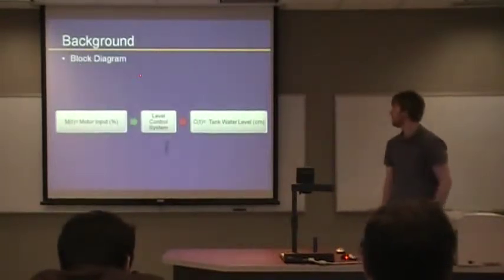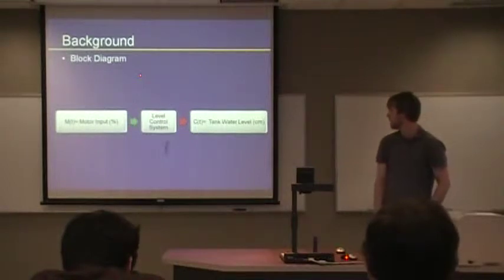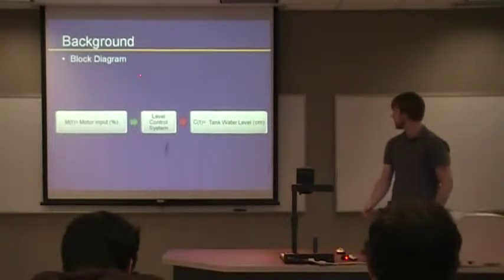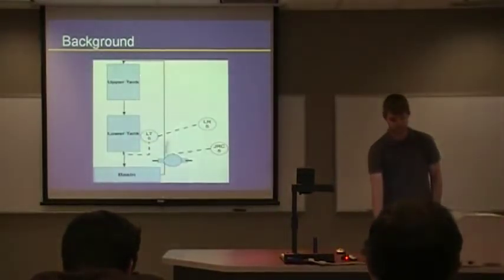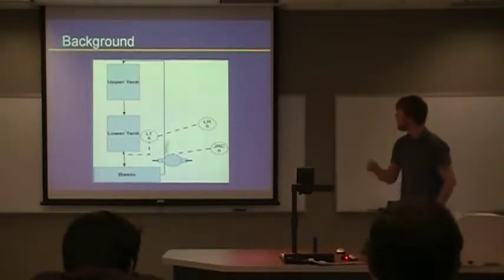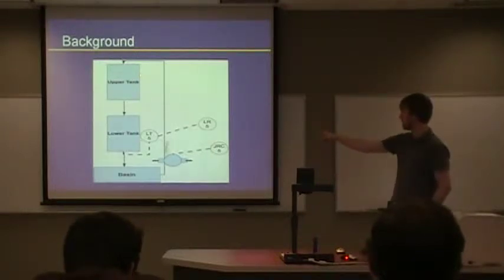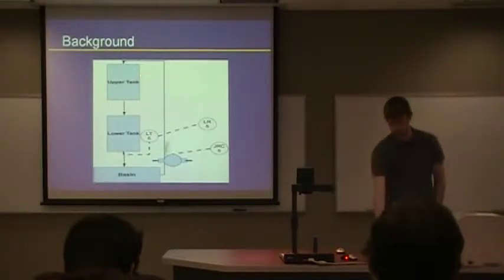Our system block diagram looks as such. You have a motor that provides an input to the load control system and the output is a water level tank. Here's a schematic of what it looks like. You have an upper tank that gets filled, which then fills the lower tank. There's a pressure sensor, the transmitter, as you can see, that transmits to the controller and the system. And here's a diagram.